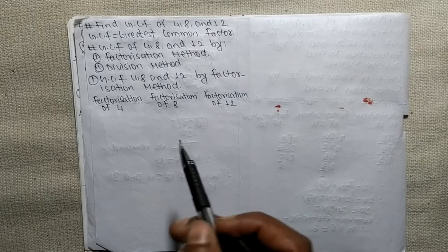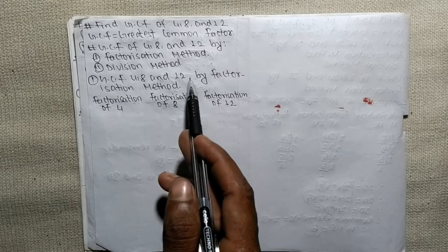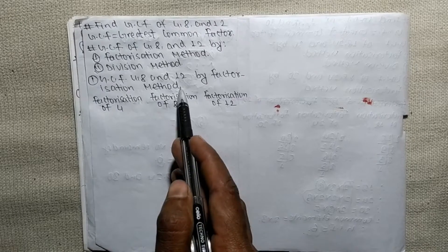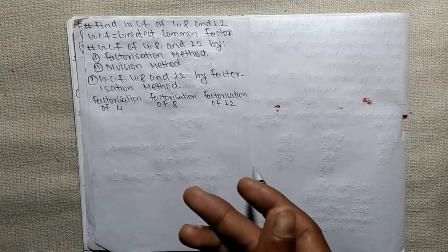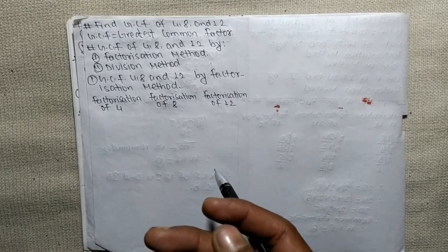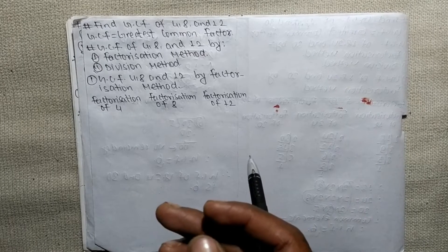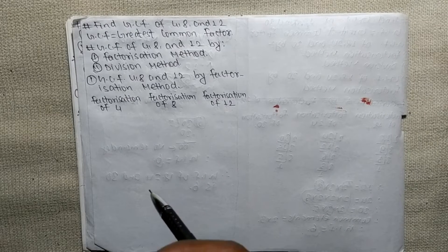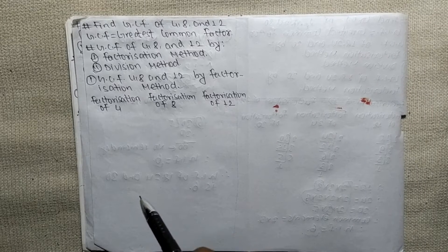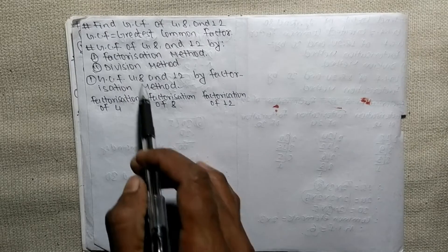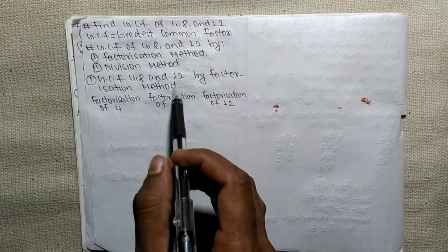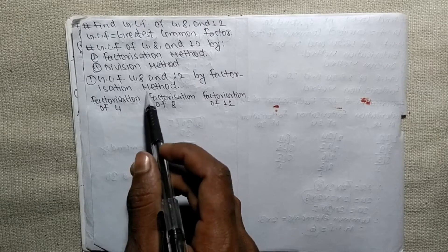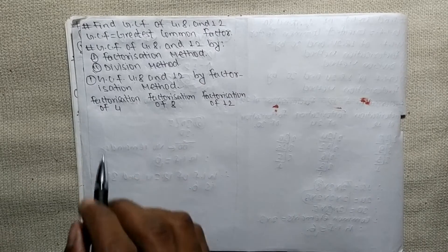We shall go through the factorization method first. To find GCF of 4, 8 and 12 by factorization method, we have to factorize all the given numbers — meaning we have to find the prime factors of 4, 8 and 12 separately.